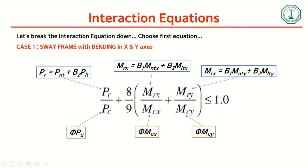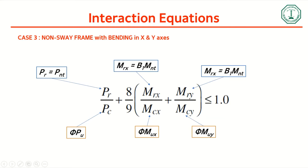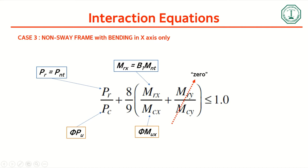In a sway frame, you calculate B1 and B2 using equations from the manual. Since it is a sway frame, you deal with NT and LT terms. With bending in both X and Y, you calculate MRX, MCX, MRY, and MCY. If there is bending in X only, the MRY over MCY term disappears. For a non-sway frame with bending in X and Y, the LT terms all disappear. If it is non-sway with bending in X only, the MRY term also disappears.